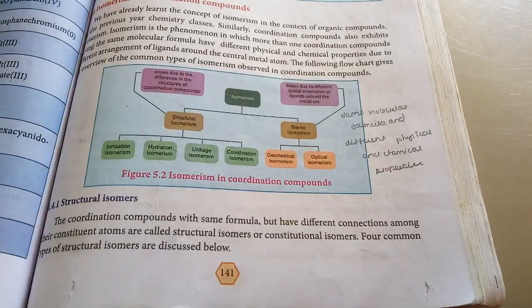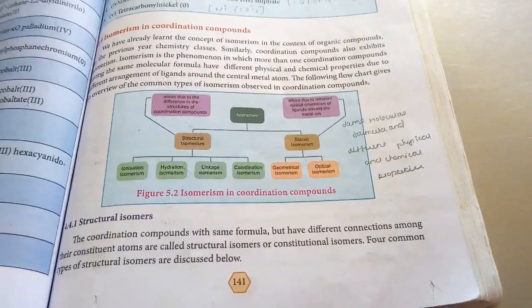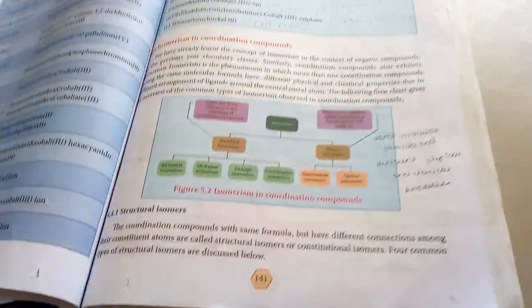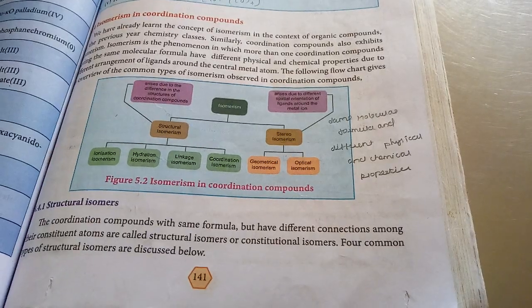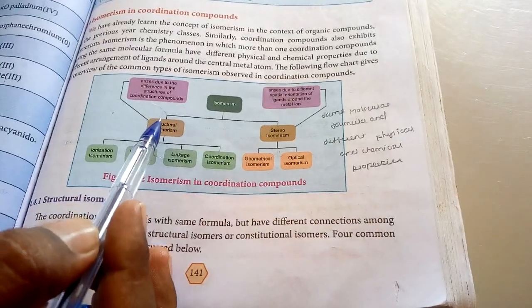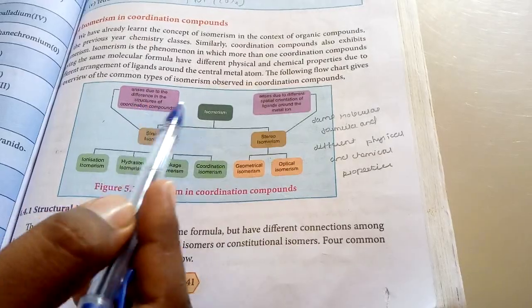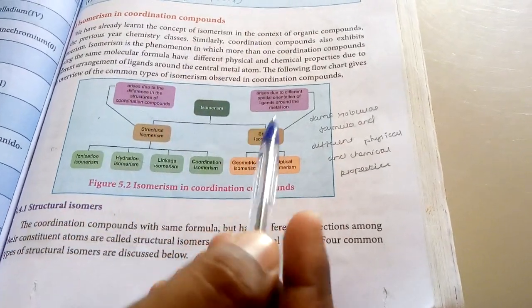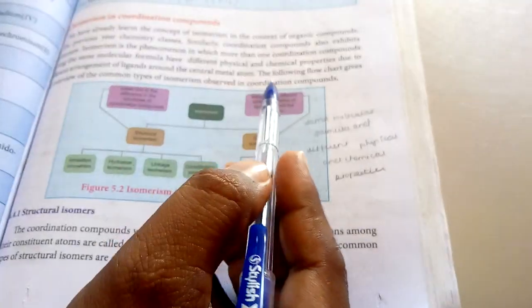These types of properties are called isomerism. Isomerism has two types: one is structural isomerism and another is stereoisomerism. Structural isomerism arises due to the difference in the structure of the coordination compound.